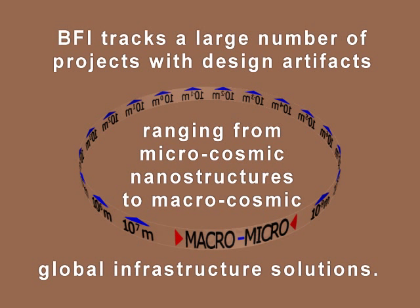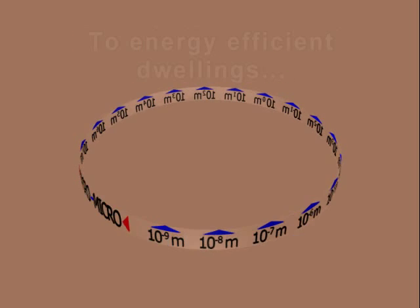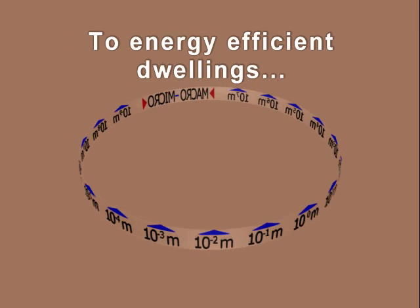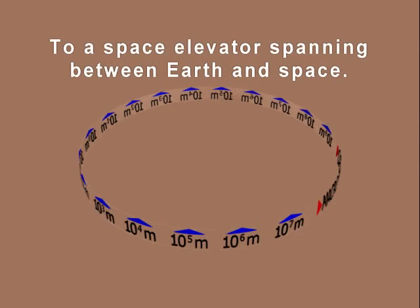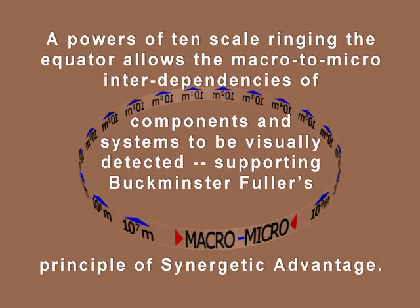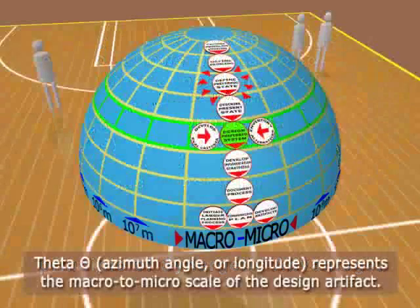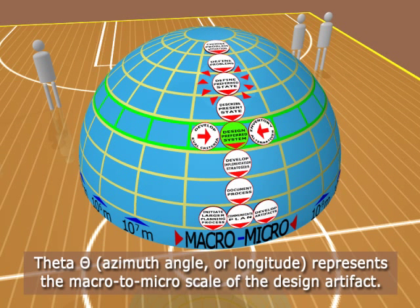BFI tracks a large number of projects with design artifacts ranging from microcosmic nanostructures to macrocosmic global infrastructure solutions — from fullerenes and nanotubes, to energy-efficient dwellings, to a space elevator spanning between earth and space. A powers-of-10 scale ringing the equator allows the macro-to-micro interdependencies to be visually detected, supporting Buckminster Fuller's principle of synergetic advantage. Thus, theta — the azimuth angle, or longitude — represents the macro-to-micro scale of the design artifact.